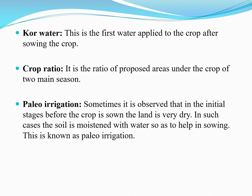Next is palau irrigation. Sometimes it is observed that in the initial stages before the crop is sown, the land is very dry. In such cases, the soil is moistened with water so as to help in sowing. This is called palau irrigation.